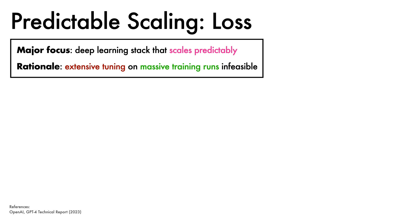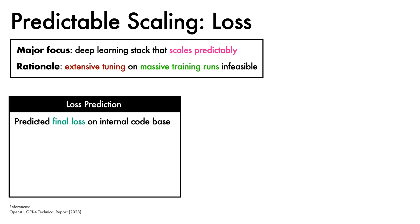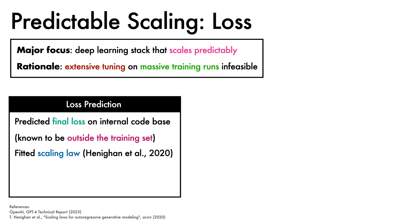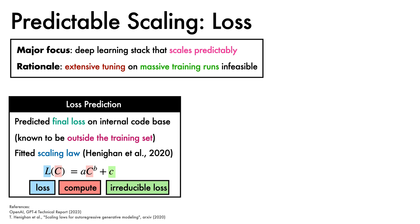To test the scalability of the deep learning stack they developed, the authors predicted the final loss of GPT-4 on their internal codebase, which is known to be outside the training set, by fitting a scaling law of the form proposed by Hennigan et al. This aims to predict the loss as a function of compute C, with a model of the form A times C to the B plus c, where the lowercase letters are parameters with c representing an irreducible loss term.